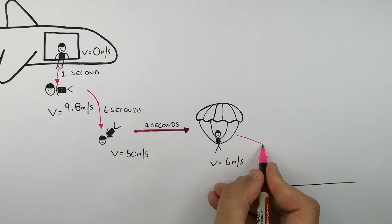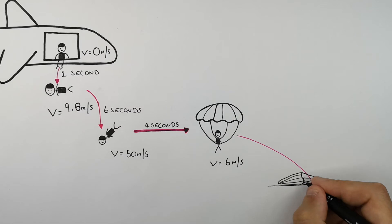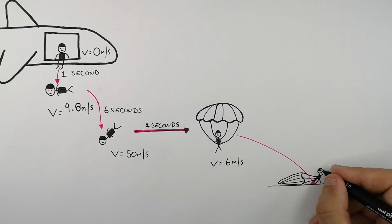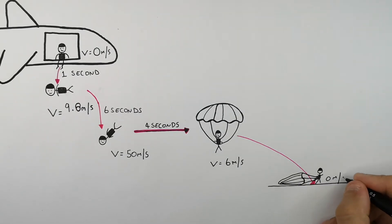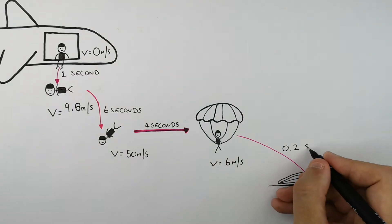Just before they land, they're moving with an initial velocity of 6 meters per second, and they decrease their velocity to a final velocity of 0 meters per second when they hit the ground. It takes them 0.2 seconds to decelerate from 6 meters per second to 0 meters per second.